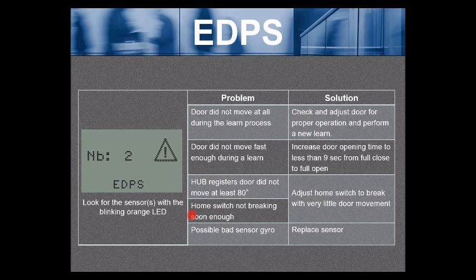Or the home switch is not breaking soon enough. So what happens if the door moves 10 degrees, 15 degrees, and then the home switch breaks? At that point, the hub is counting the opening angle from when the home switch breaks. You can see that even though the door opens 90 degrees, the hub registers that maybe the door only opens 70 degrees. So adjust the range of your home switch so it breaks with very little door movement.